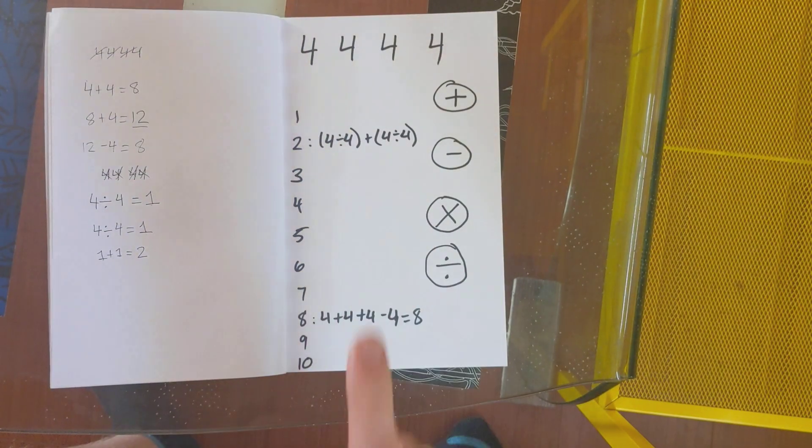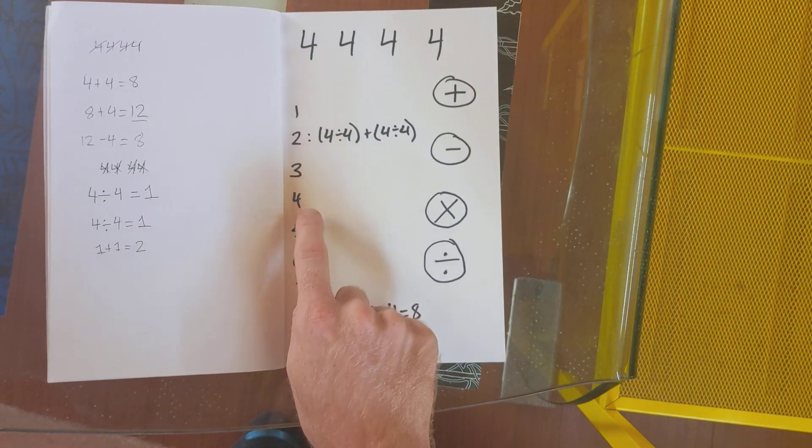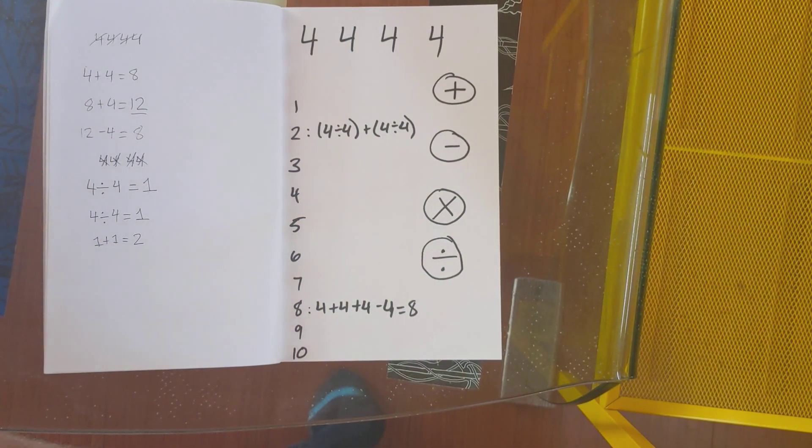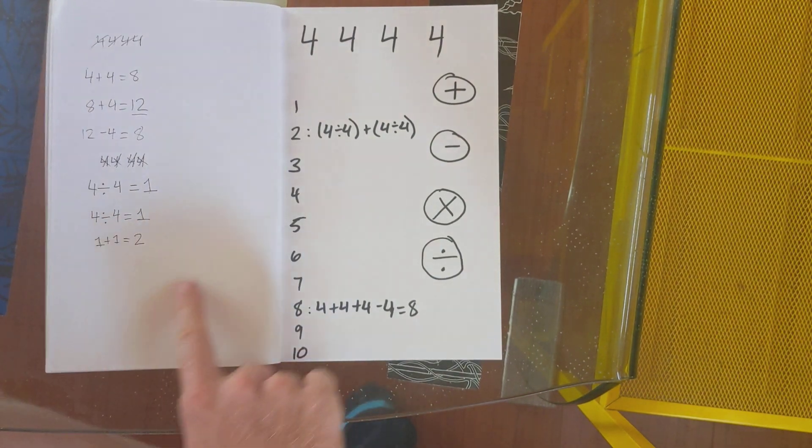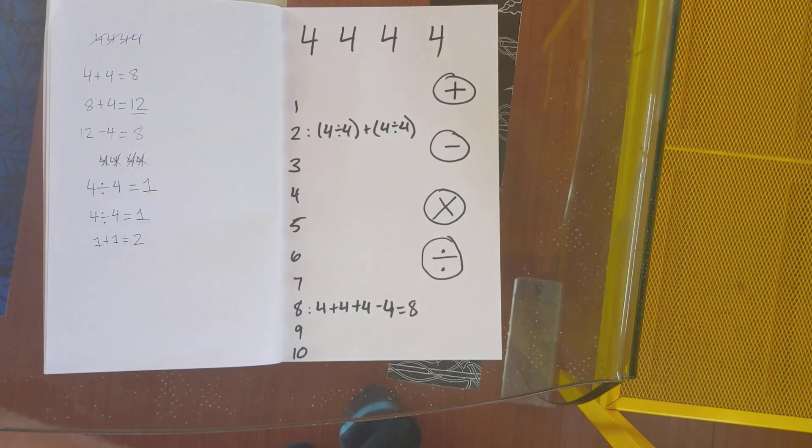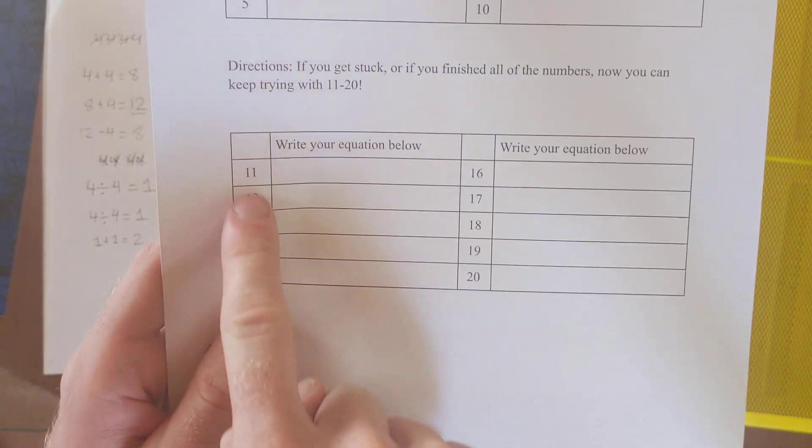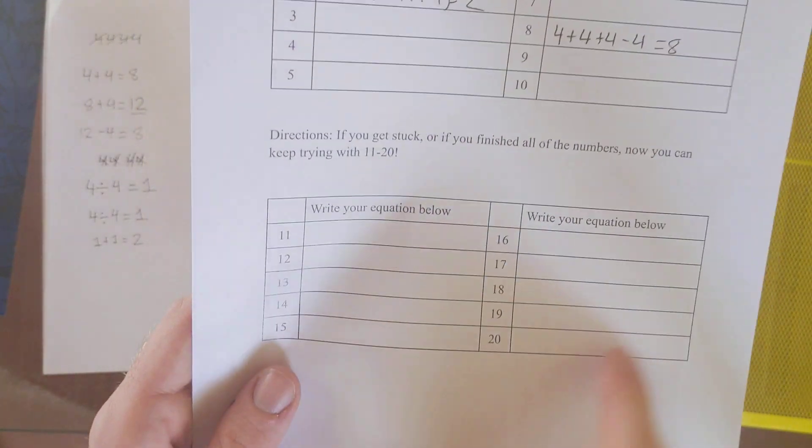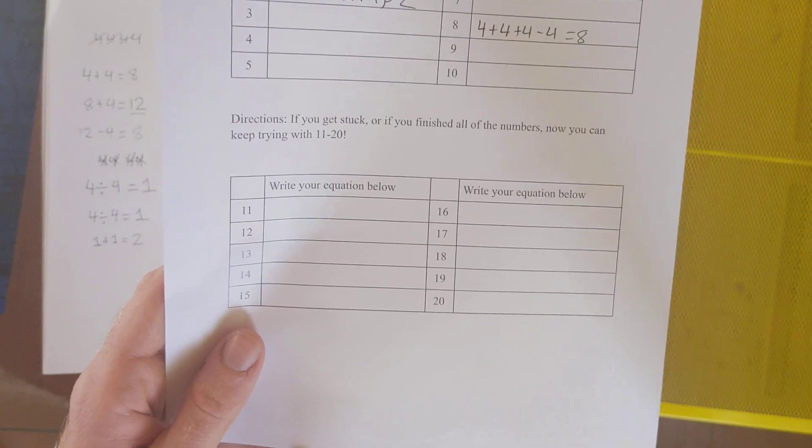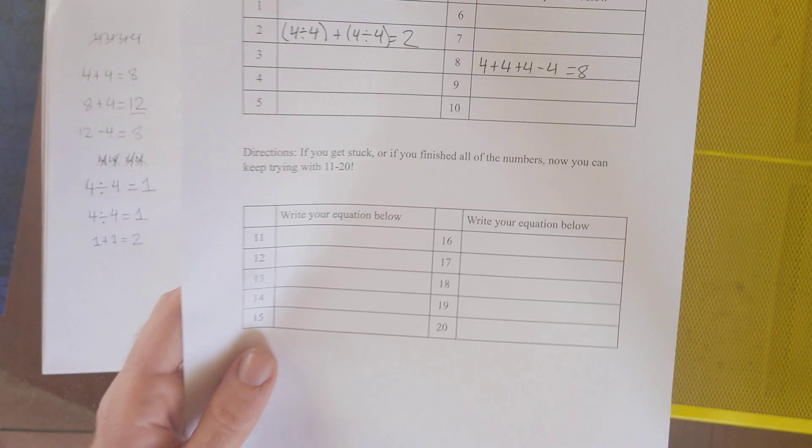All right so I've given you number two and number eight. I want you to try to see if you can do one three four five six seven nine and ten. It might be a little bit hard at first but keep just playing around with numbers. Do different things and try to get all ten. If you want an extra challenge or if you get stuck you can try doing eleven through twenty. Some of these ones are really easy. Like I'll give you a hint. Sixteen is so easy. So if you get stuck on these ones you can try to do the ones at the bottom first.